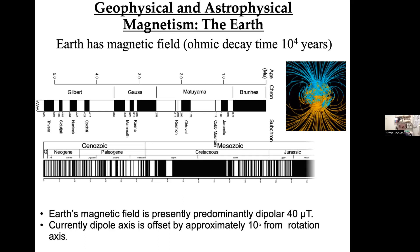The correct non-dimensional parameter for determining how efficient dynamos are is the magnetic Reynolds number. In the earth, the magnetic Reynolds number is roughly of order a thousand, and we'll see that has implications when we look at magnetic Reynolds numbers in stars and galaxies.